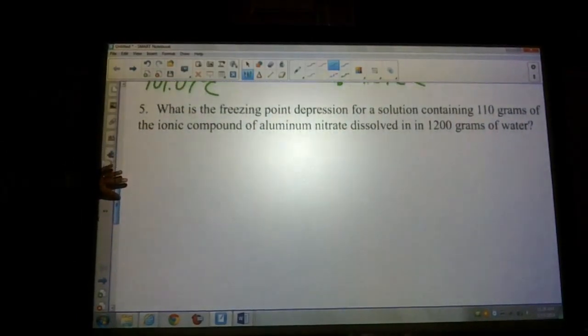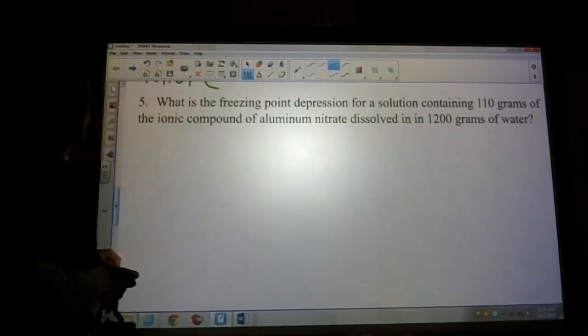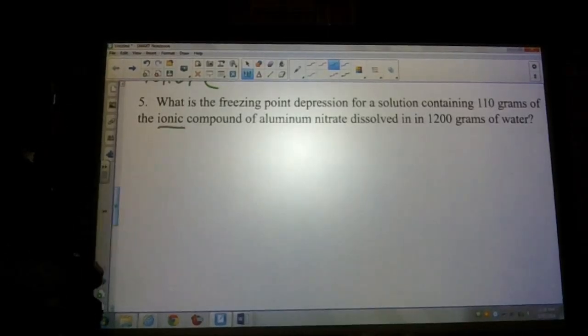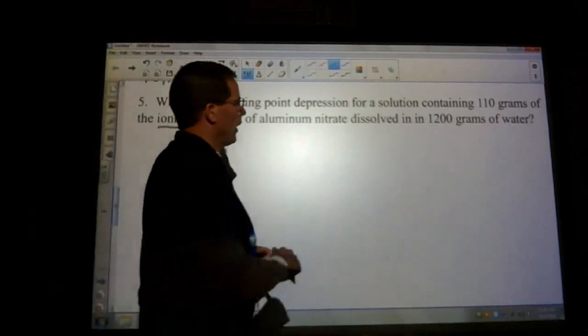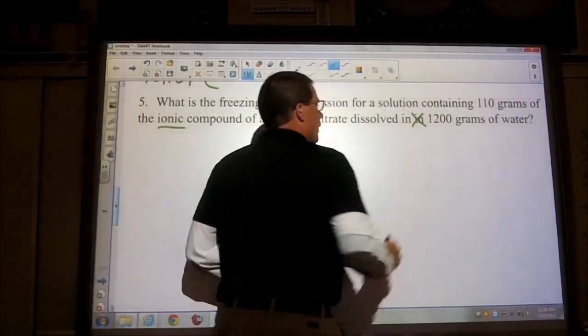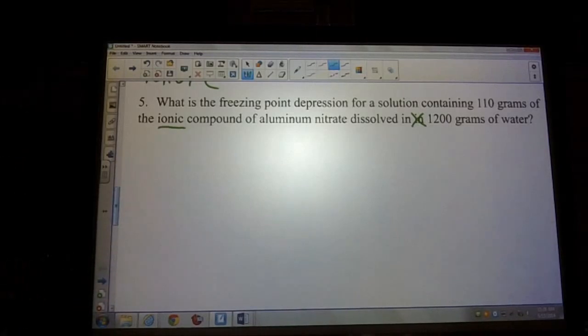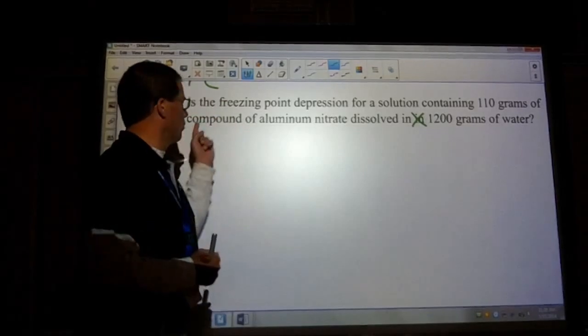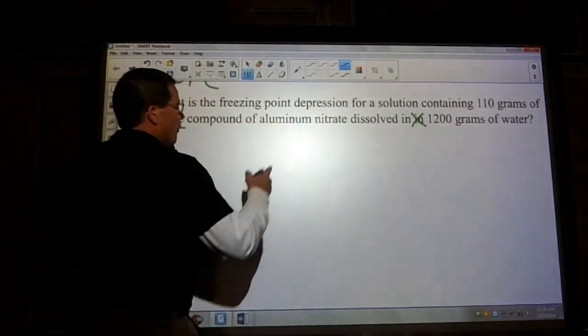Number five. What is the freezing point depression for a solution containing 110 grams of the ionic compound aluminum nitrate dissolved in 1,200 grams of water. You have an ionic compound. You know it's an ionic compound, not because I told it to you, but because you have aluminum, which is a metal.